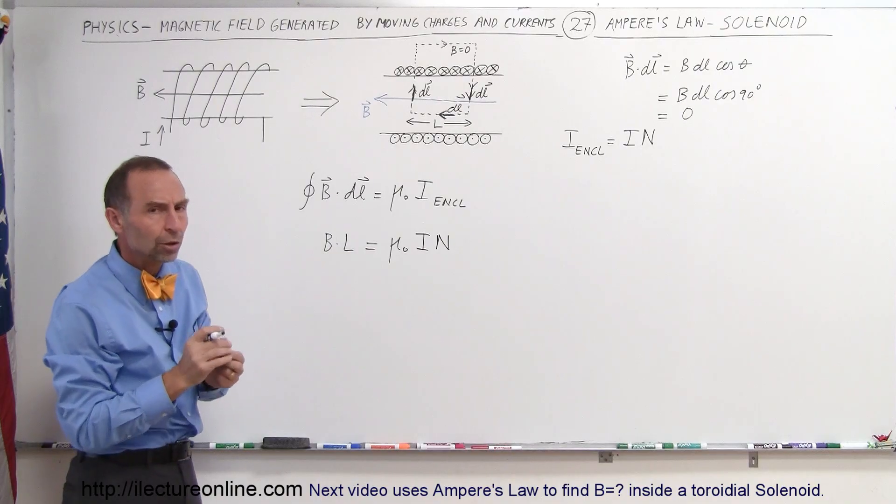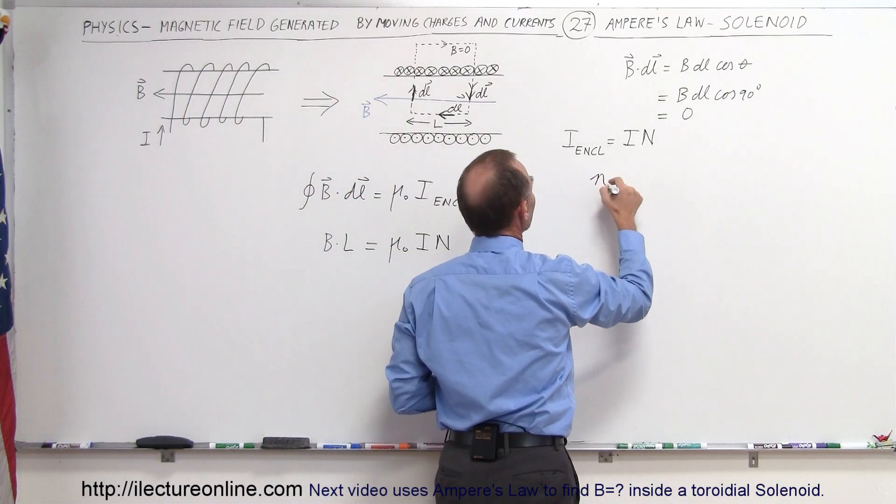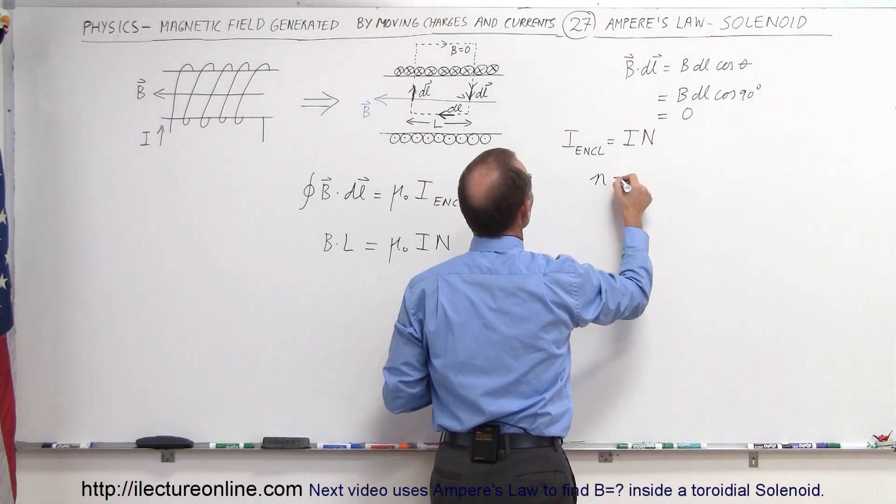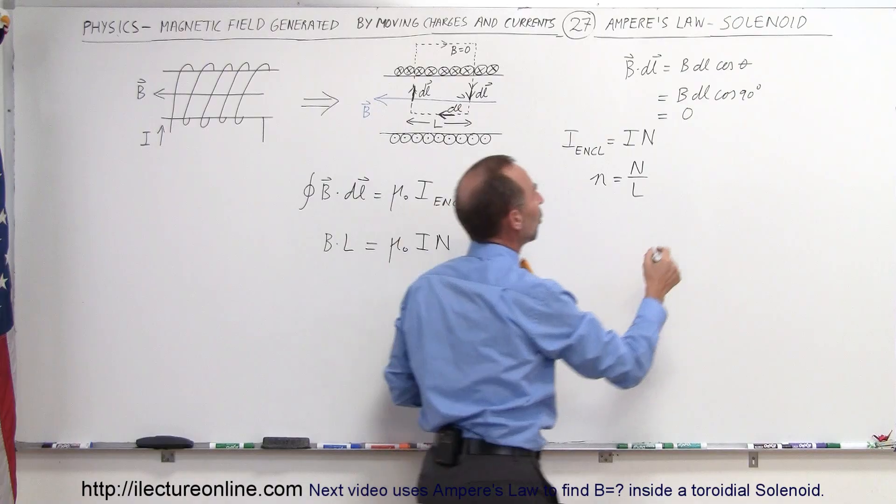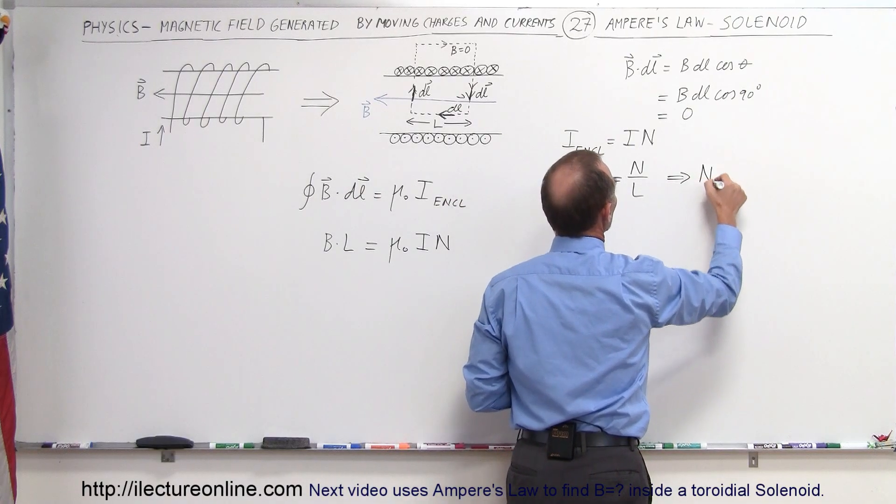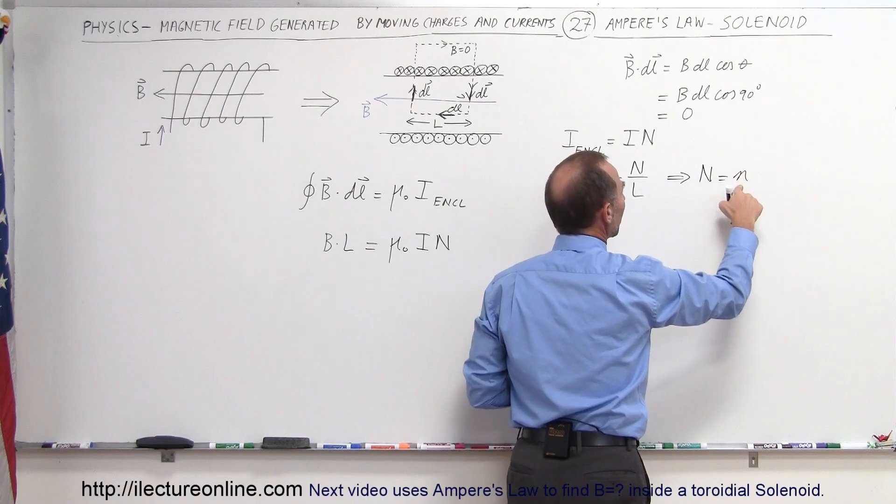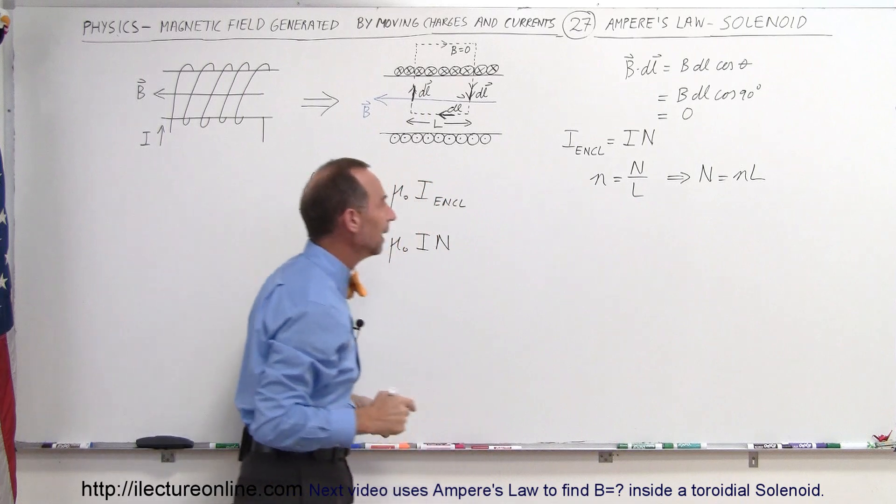Another way we can look at that is we can look at the linear line density. So we can say that N, the density of the wires, is equal to the total number divided by the length, because it's linear density. Or we can say, therefore, that the total number is equal to the number of wires per unit length times the length, by multiplying capital L times small n.